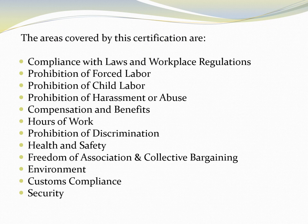The areas covered by WRAP certification include compliance with law and workplace regulation, prohibition of forced labor, prohibition of child labor, prohibition of harassment or abuse, compensation and benefits, hours of work, prohibition of discrimination, health and safety, and freedom of association and collective bargaining. The program objective is to independently monitor and certify compliance with these socially responsible global standards for manufacturing and to ensure that manufactured products are produced under lawful, humane, and ethical conditions.